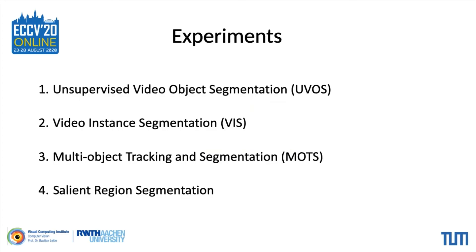To show its efficacy, we apply StemSeg to multiple tasks related to object segmentation in videos across different datasets: unsupervised video object segmentation, where the task is to segment any object of interest across a video without a first-frame ground truth mask; video instance segmentation, where the task is to segment objects belonging to any of 40 categories; multi-object tracking and segmentation, which is oriented towards the autonomous driving community for segmenting pedestrians and cars; and salient region segmentation, where the task is to segment all foreground objects that are salient across a video.